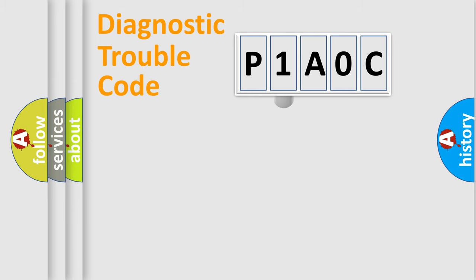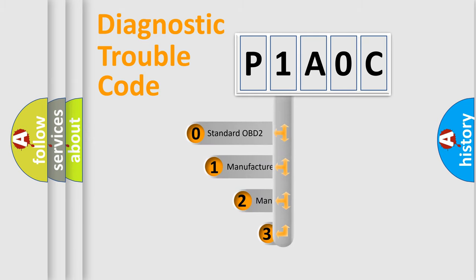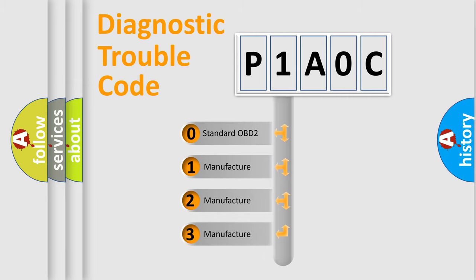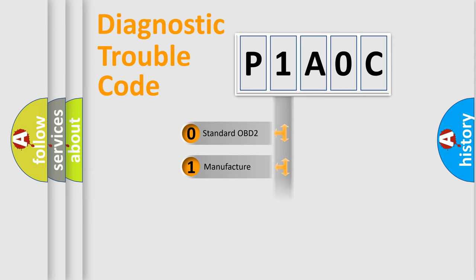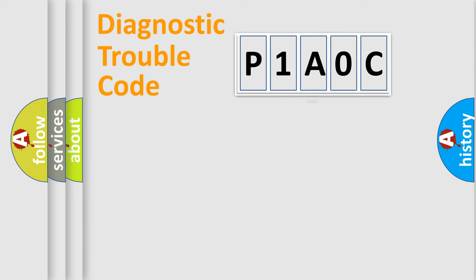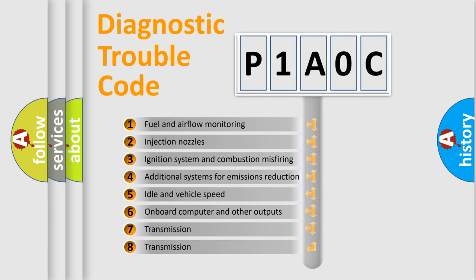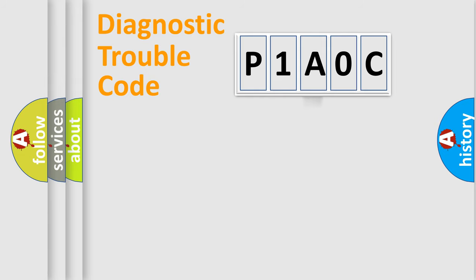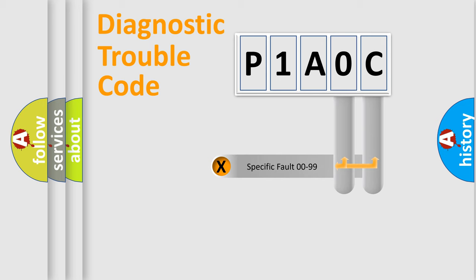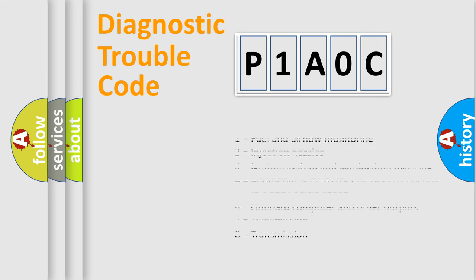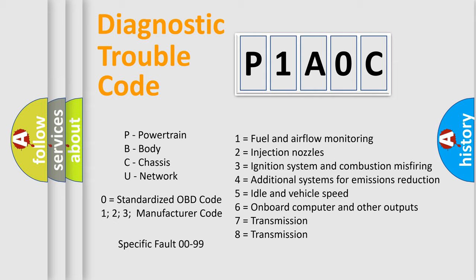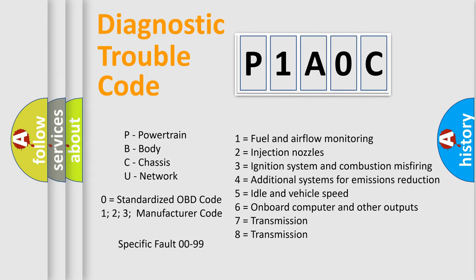This distribution is defined in the first character of the code. If the second character is expressed as zero, it is a standardized error. In the case of numbers 1, 2, or 3, it is a more specific car-specific error. The third character specifies a subset of errors. The distribution shown is valid only for the standardized DTC code. Only the last two characters define the specific fault of the group. Such a division is valid only if the second character code is expressed by the number zero.